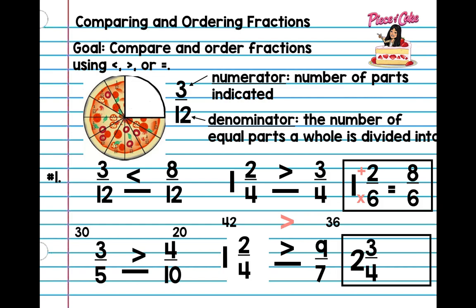Try this one by yourself. Did you get eleven over four? Good. Four times two is eight, plus three is eleven — eleven over four.